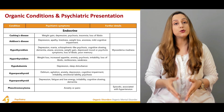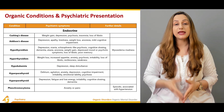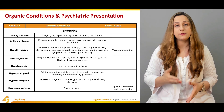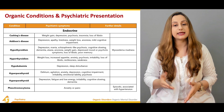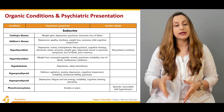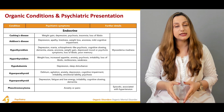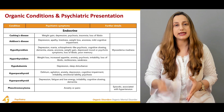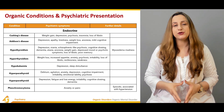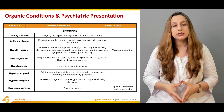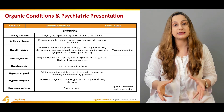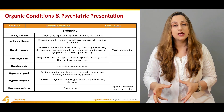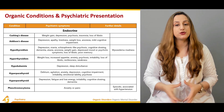Hypothyroidism, another endocrine abnormality, presents with depression, mania, schizophrenia-like psychosis, cognitive slowing, dementia, ataxia, anorexia, weight gain, depressed mood, psychotic symptoms, loss of libido, and poor memory. This full syndrome is basically characterized as myxedema madness — the terminology used for this condition.